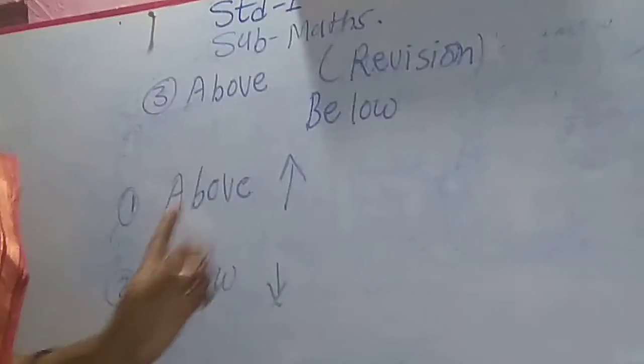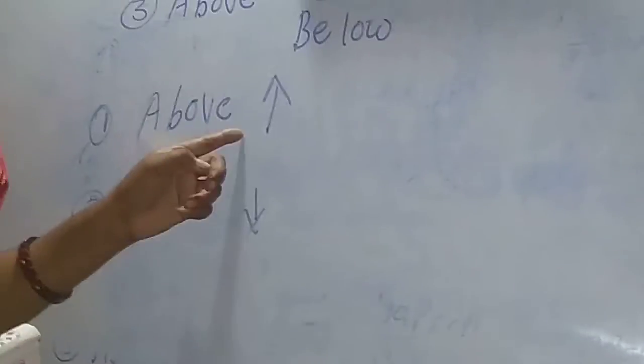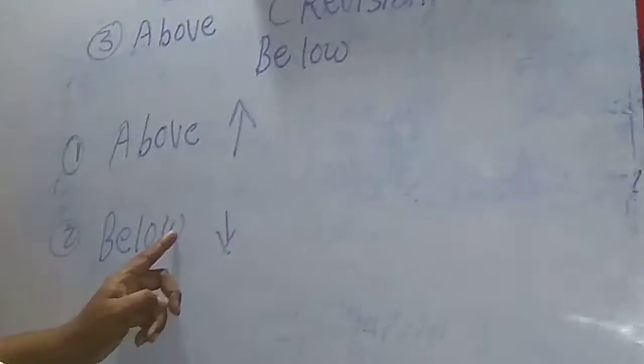How to speak? A-B-O-V-E. Repeat again. A-B-O-V-E, above. B-E-L-O-W, below. Below means neche. Above means up. Above means up. Below means down. Okay.